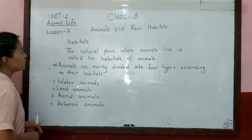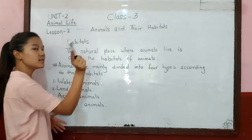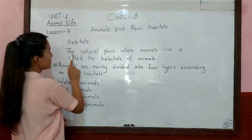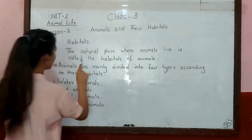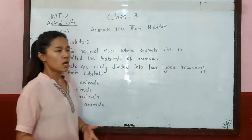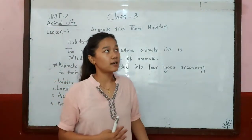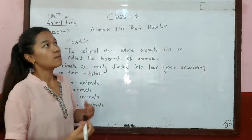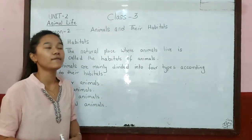First of all we have to learn about habitats and its definition. The natural place where animals live is called the habitat of animals. We can see various types of animals living in their different places. Some live in air, some live in water, some live on land.